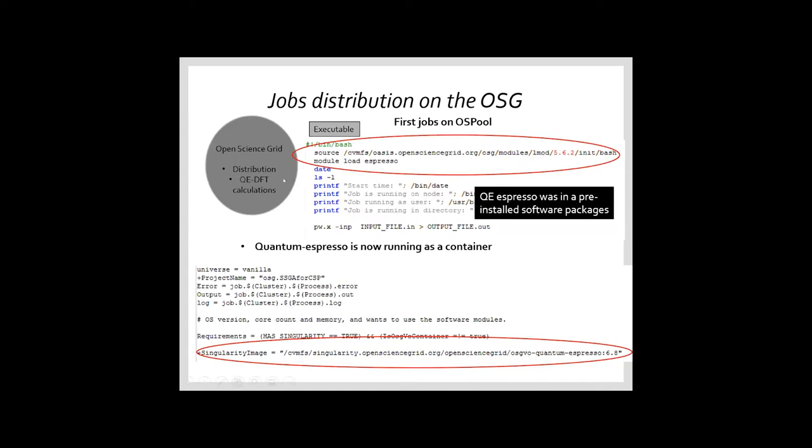But what happened on the OSG? When I ran my first jobs around one year and a half ago, we ran Quantum Espresso as a pre-installed software. The problem with this was that Quantum Espresso was not available in all nodes. So when we ran the job, the job failed immediately.